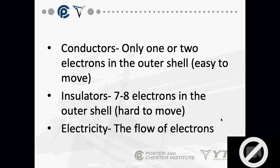Conductors don't have a good bond, so electrons jump easily from one atom to another. Insulators, on the other hand, have seven to eight electrons in the outer shell and are harder to move. Insulators include rubber, glass, dry wood, and plastic.